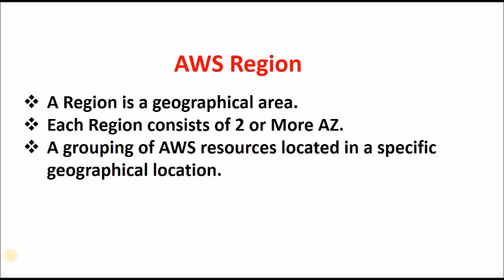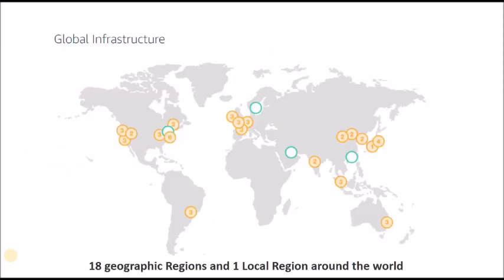Let us have an overview of regions. This is the global infrastructure — the orange ones are called regions. In India we have two regions: one is at Mumbai and the other is at Chennai. Similarly, in Australia, UK (London), and everywhere else, there are regions. This is the global infrastructure of AWS.